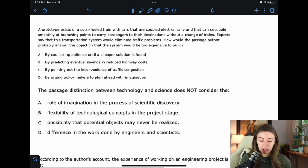But let's go through and do what I was going to do earlier by marking things out. B, flexibility of technological concepts in the project stage. So I think the author considered that. They talked about projects or things in the project stage. I don't think that there was a lack of flexibility. So I think B was probably considered. C, the possibility that potential objects may never be realized. So that was definitely considered, right? Because the author specifically said at one point, when comparing to novelists, that the technologies may or may not ever be realized. D, difference in the work done by engineers and scientists. Definitely considered, right? Engineers are so much better than scientists. That was clear. Clearly the author's opinion. So I think A. The author did not consider the role of imagination in science.